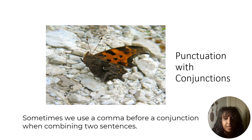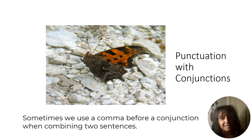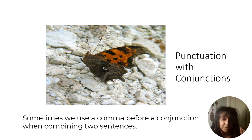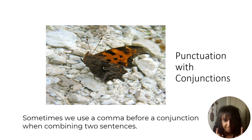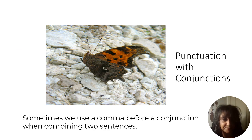When it comes to punctuation and conjunctions, sometimes we use a comma before a conjunction or at the end of one of the clauses when we're combining sentences. Let's look at some examples.